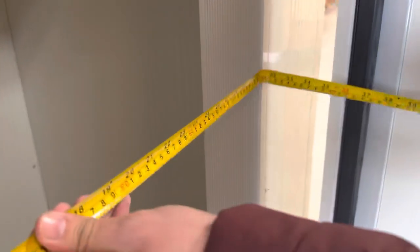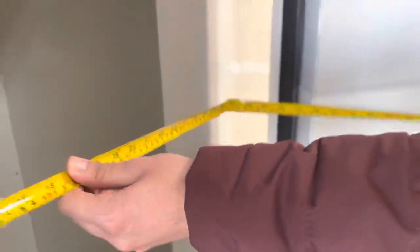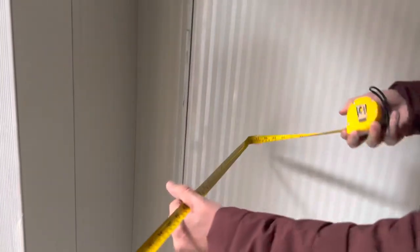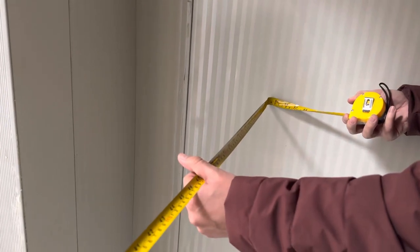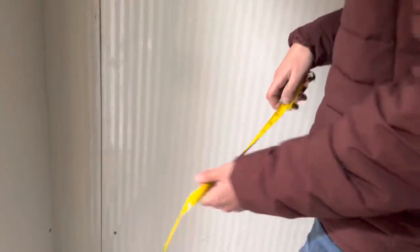Now I'm going to walk inside and measure the inside for you. So across from one side to the other, you're looking at a total of 64 and a half inches. From front to back, you're looking at 40 inches.